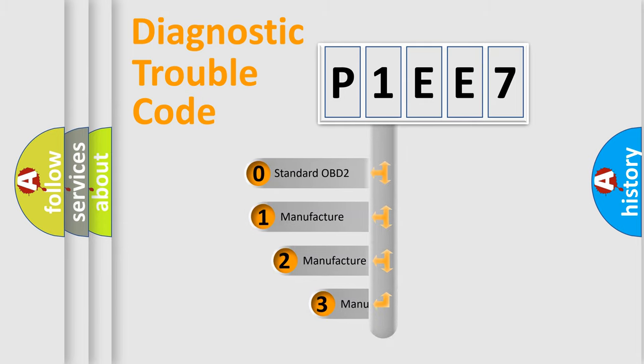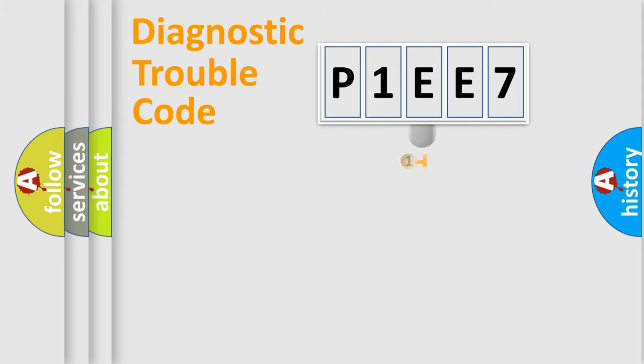If the second character is expressed as zero, it is a standardized error. In the case of numbers 1, 2, or 3, it is a manufacturer-specific error expression.